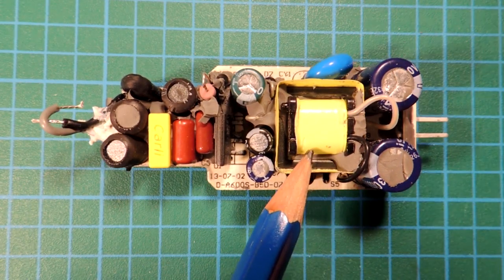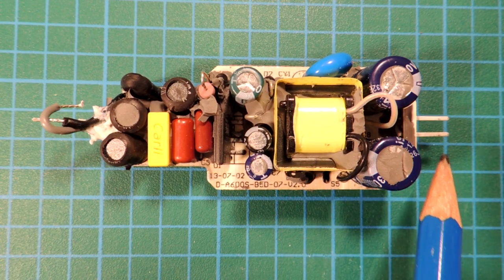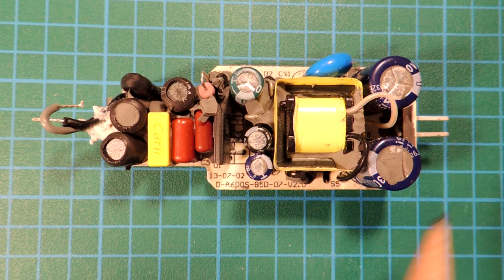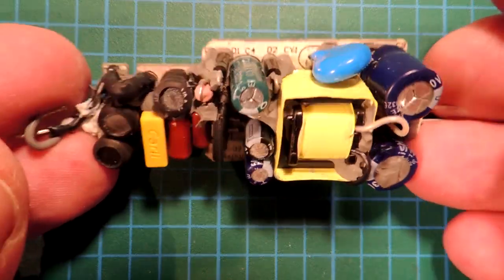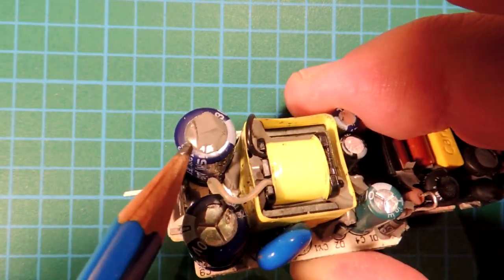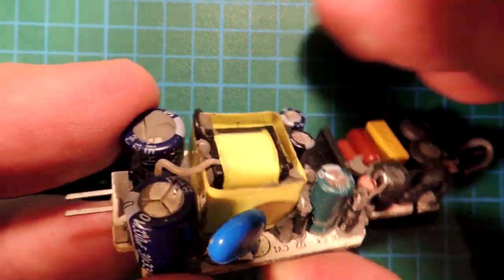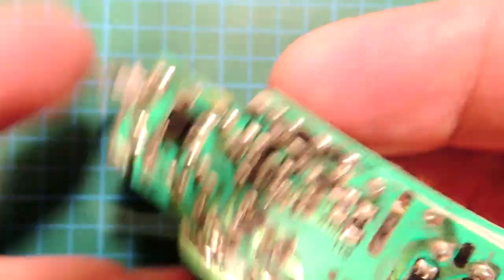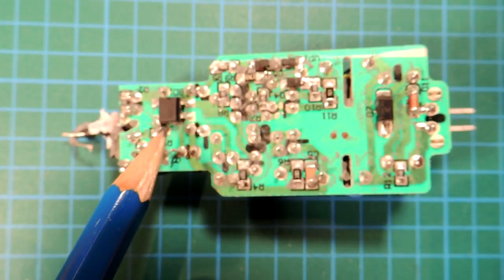There is a filter over here to conduct emissions back into the power line. Looks like an isolated design, the transformer here, and I can't get any continuity between the two DC connector outputs and the AC. The filter capacitors are here, they're rated to 125 degrees centigrade.